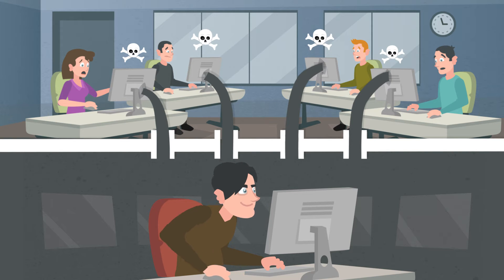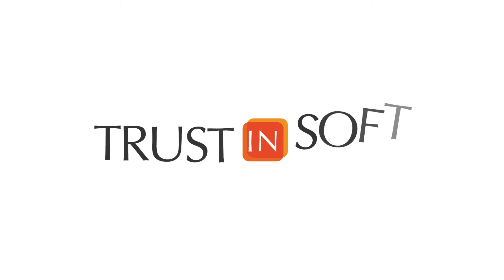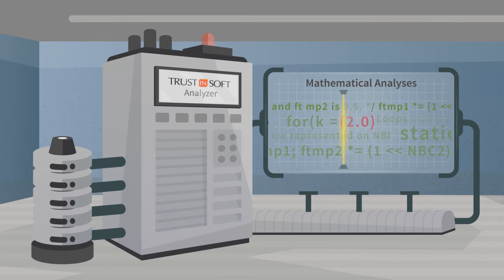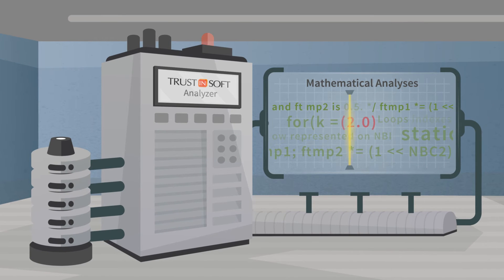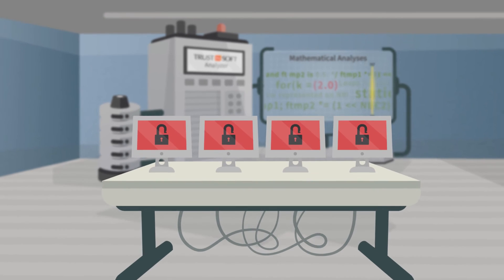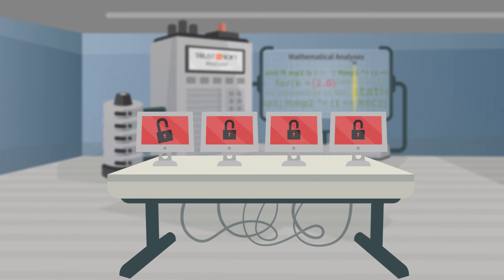What Tom needs are guarantees, not guesses. That's where the TrustinSoft Analyzer comes in. TrustinSoft Analyzer is an advanced static source code analyzer that performs comprehensive mathematical analyses of software to detect source code flaws. It's the only software that can mathematically guarantee the most common security flaws are not present in Tom's software.